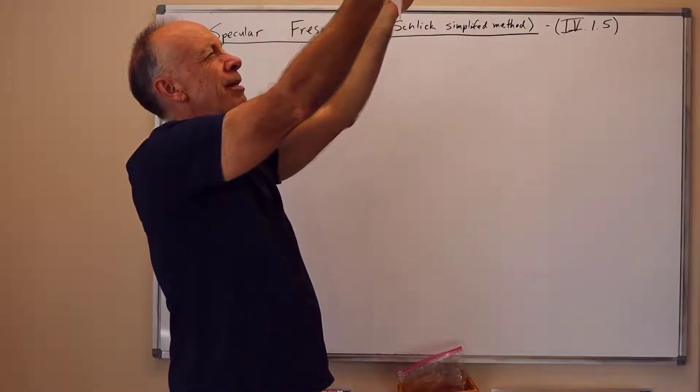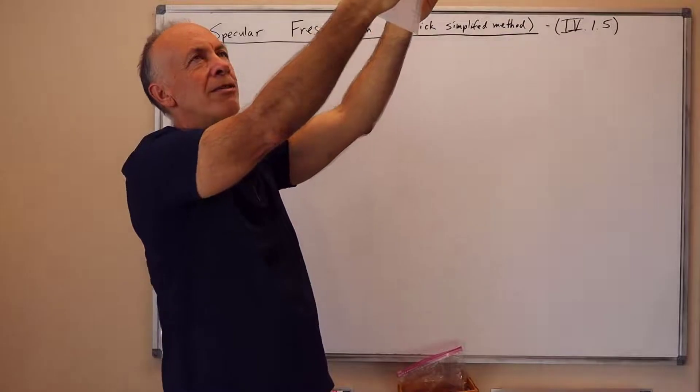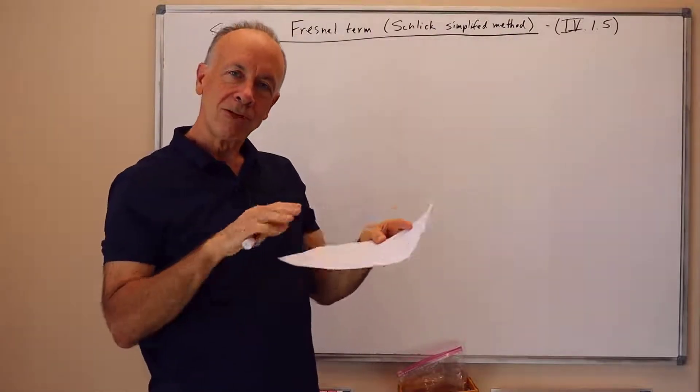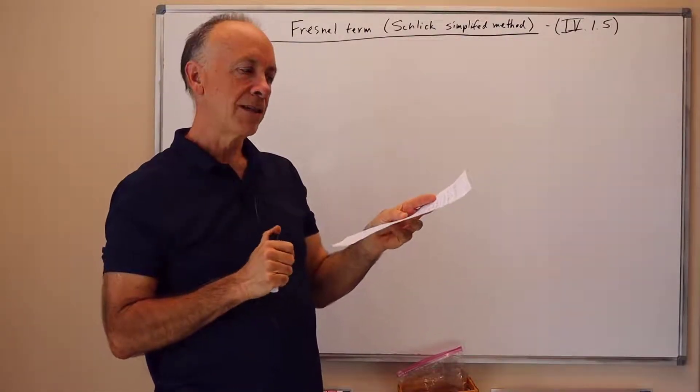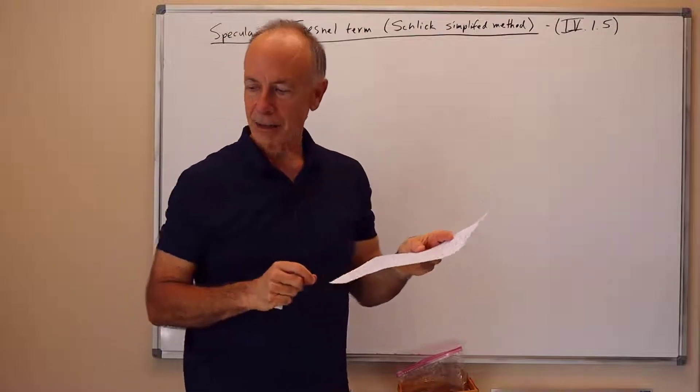then I will see specular highlights on the paper. Maybe very clearly with the one right above me there, and also this other yellowish light there. So if you look straight on the edge of a piece of paper towards the light, you'll see a specular highlight appear.